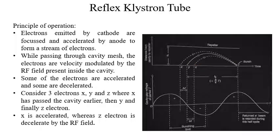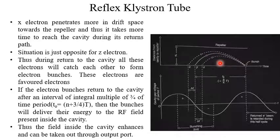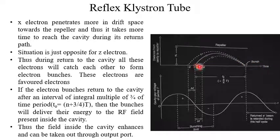X electron penetrates more into the drift space. As seen in the Applegate diagram, the repeller is at negative potential, so electrons traveling toward it are repelled back toward the cavity wire mesh. Since X was accelerated, it penetrates further toward the repeller and thus takes more time to return to the cavity. The situation is just opposite for Z electrons. During their return journey toward the cavity, all these electrons — X, Y, and Z — catch each other to form electron bunches.